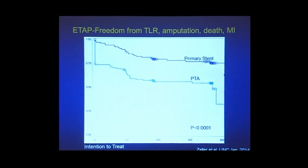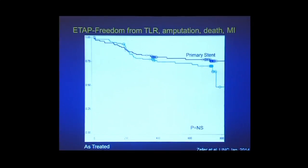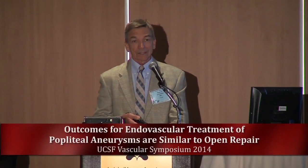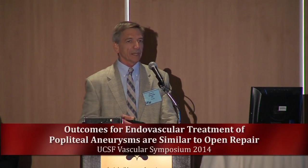Looking at freedom from TLR, amputation, death, and MI: in the PTA group, patients who required selective stenting were defined as having a TLR — the same way the Resilient trial was done. If you include that as a failure, the curves look one way. But if you include it and call it PTA with selective stenting, you see the curves are superimposed. So PTA with selective stenting appears, at least in this trial — the biggest popliteal trial to date — to do about the same as primary stenting.